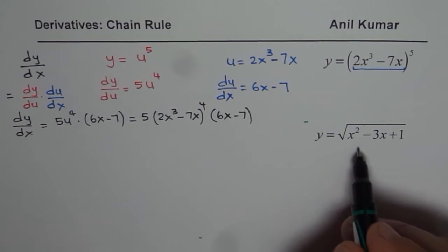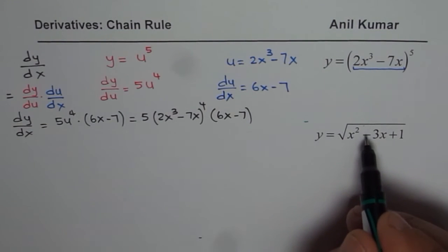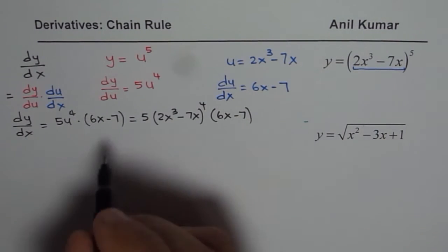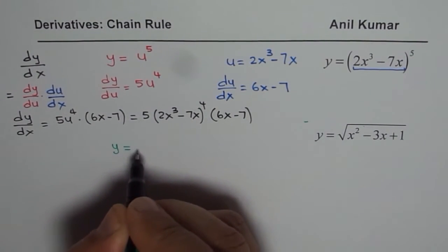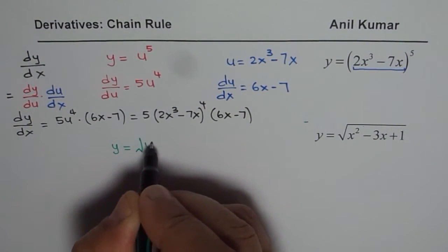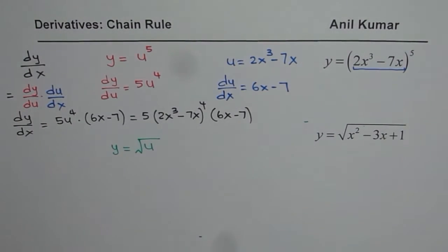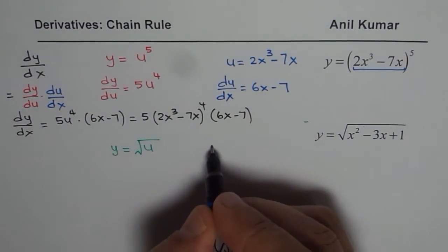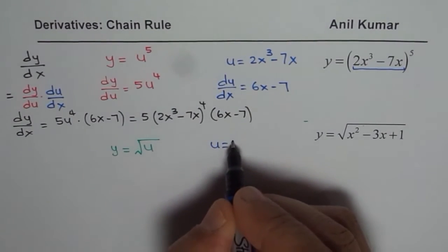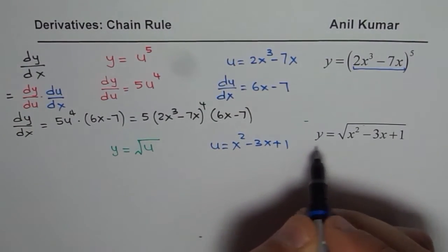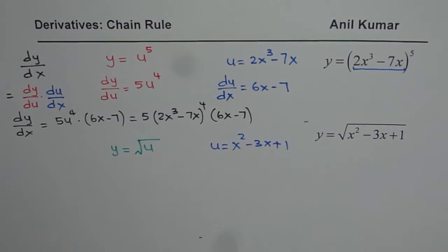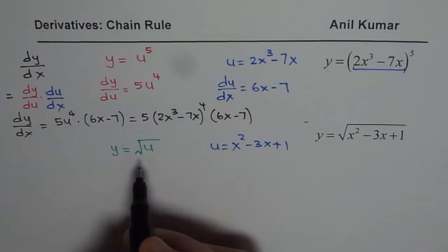which is y equals to square root of x² - 3x + 1. Let us split it into two functions. We say the outside function is the square root function. We could write this as y equals to square root of u, where u is equal to x² - 3x + 1. You get the point. Think like this.